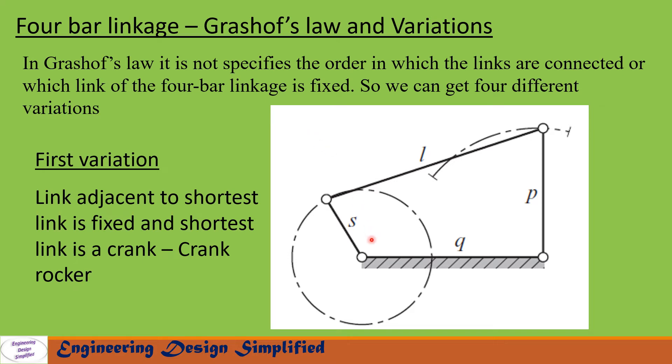So the first variation is the link adjacent to the shortest link is fixed. In this case, we get a crank rocker mechanism and here the shortest link is the crank. So that will make 360 degree rotation, and P, the link opposite to the shortest link, is the follower link that will not make 360 degree rotation. That will rock back and forth to a certain angle.